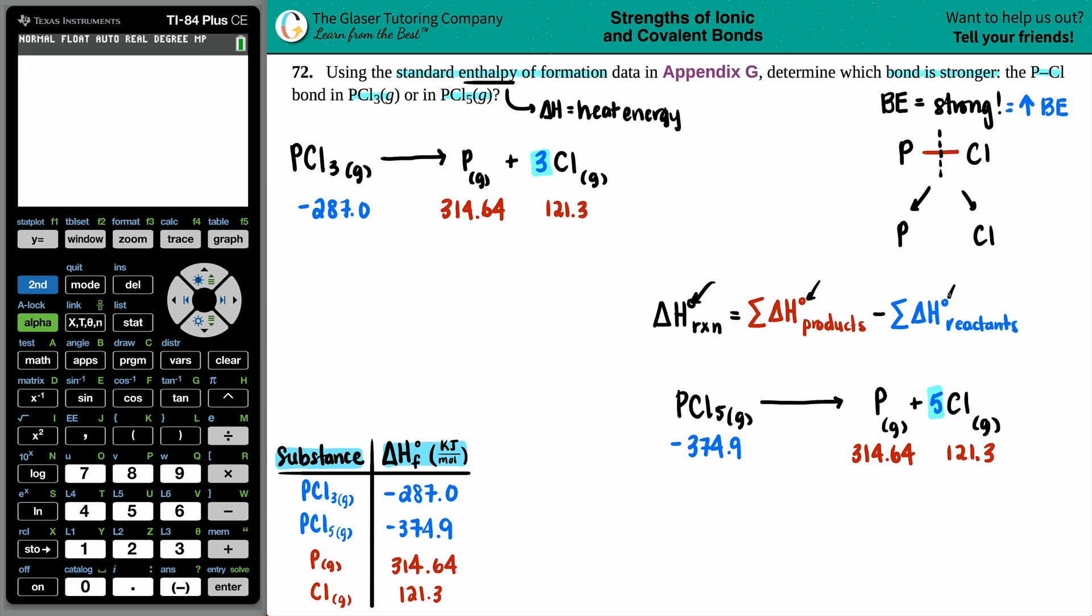We have notches, which are these circle things. This just means we're using the appendix values, the standard values in the back. So delta H for any reaction equals the sum - that's this symbol here - just means we're going to add. We're going to add up all of the products, and then we're going to minus it by the sum of all the reactants.